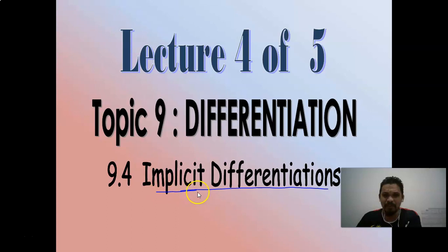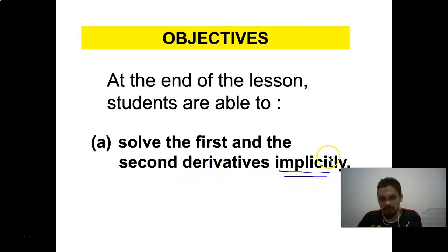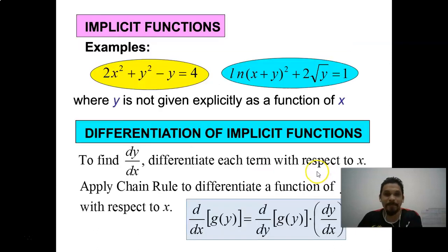At the end of the lesson, students should be able to solve the first and second derivative implicitly. For example, a function like 2x² + y² - y = 4, where y is not given explicitly as a function of x.